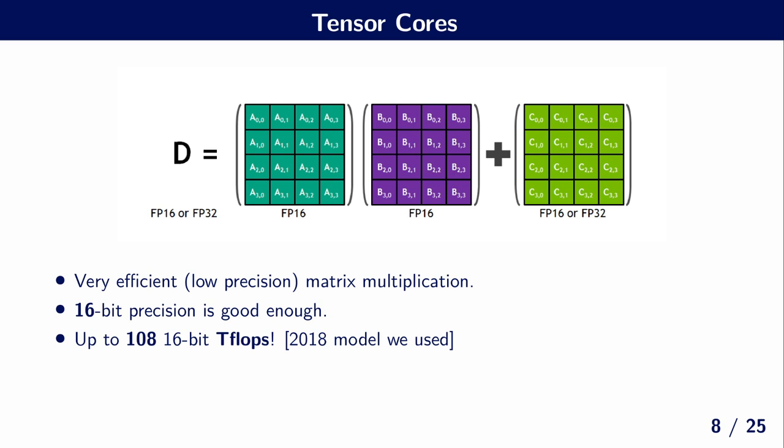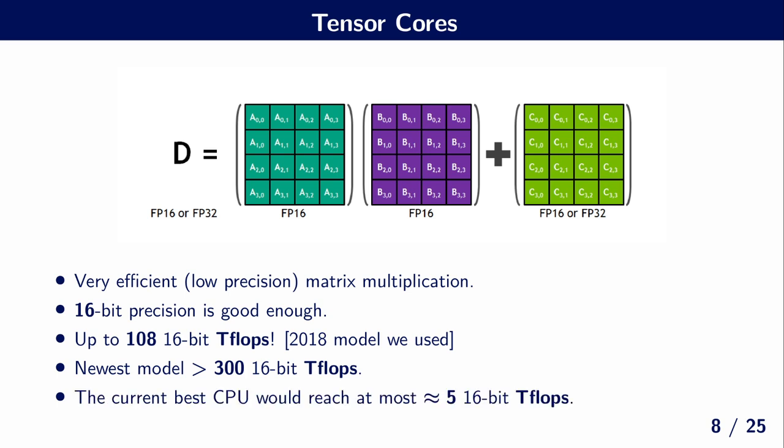And with efficient, I mean that on these old models we used, we can have up to 108 16-bit teraflops on a single GPU. And on the newer models, we even can reach more than 300 16-bit teraflops. So when we compare this to a current best CPU, which with 64 cores would reach at most about 5 teraflops, you can already see the order of 2 magnitudes improvement from these GPUs.